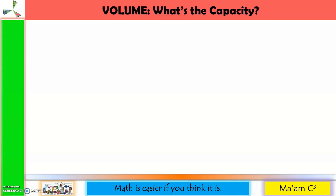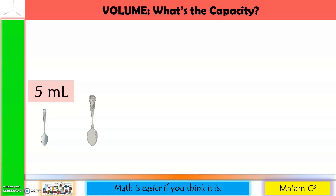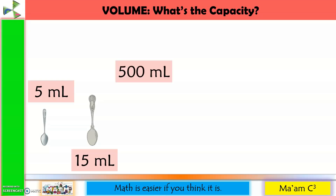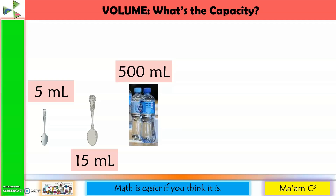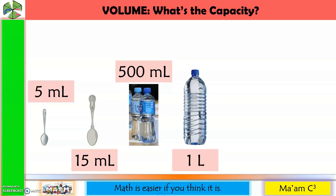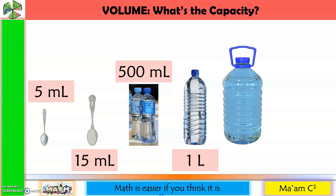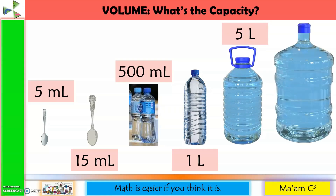Let us approximate some of the measurements. A teaspoon holds approximately 5 ml of liquid. A tablespoon is 3 times a teaspoon, so it is 15 ml. A medium-sized bottled water is 500 ml; twice that is 1 liter. Five liters looks like a medium water container, and 4 times 5 liters is approximately 5 gallons.